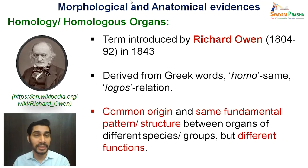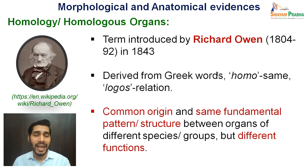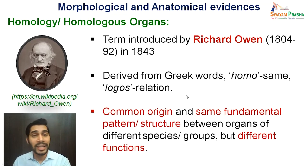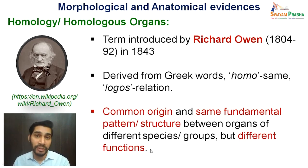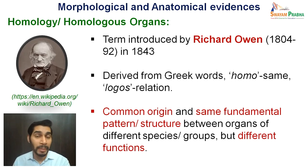Starting with homologous organs, the term was introduced by Richard Owen in 1843. The term homology has been derived from the Greek words homo, which means same, and logos, which means relation. Homologous structures are structures which have a common origin or common ancestry. They have the same fundamental pattern or structures, though minor structural differences can be there. They belong to different groups of species or organisms, but they have different functions.